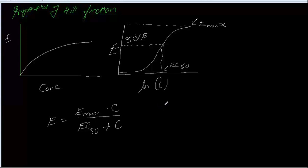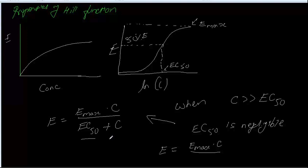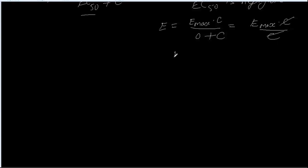Let's see what will happen when C is very, very greater than EC50. In this equation, when C is very, very greater than EC50, EC50 becomes negligible. So E equals Emax times C over (0 + C), which is Emax times C over C. The C's cancel and effect equals Emax.